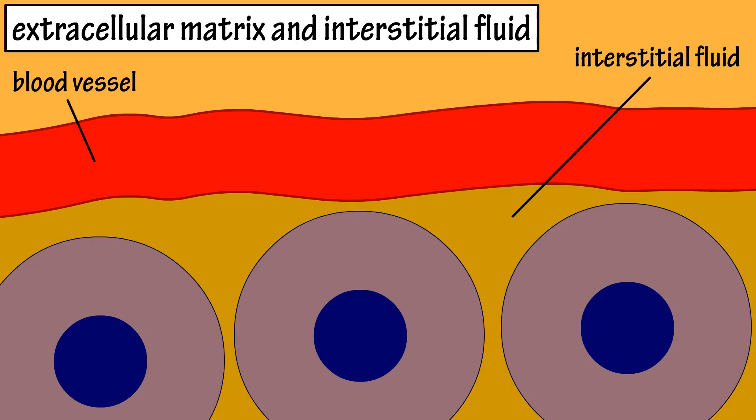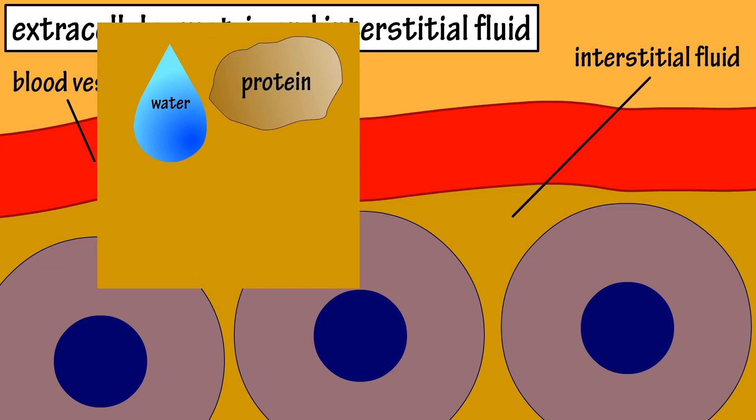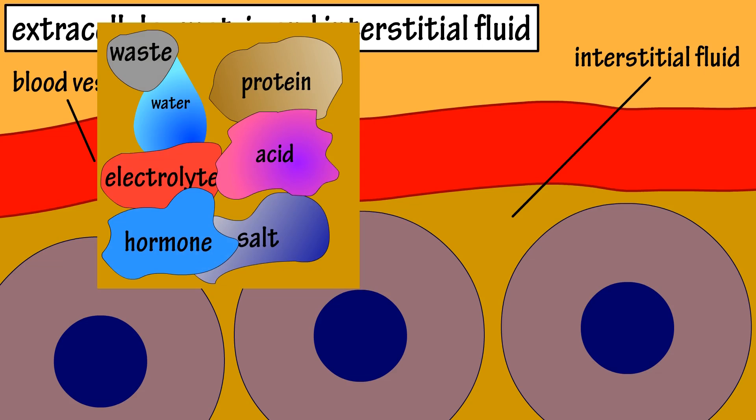This fluid that surrounds the cells and is separate from the blood vessel is called interstitial fluid. This interstitial fluid contains water, proteins, electrolytes, salts, acids, hormones, and cell waste materials.